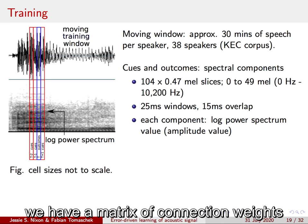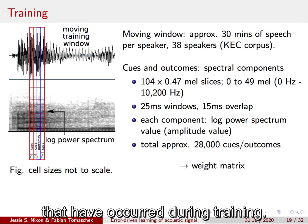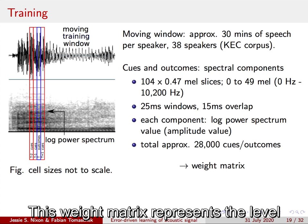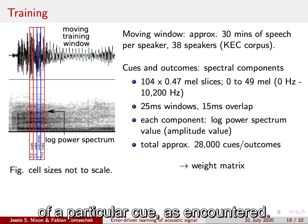At the end of training we have a matrix of connection weights between all the cues and outcomes that have occurred during training. This weight matrix represents the level of expectation of the different possible outcomes if a particular cue is encountered.